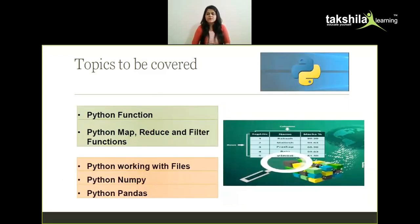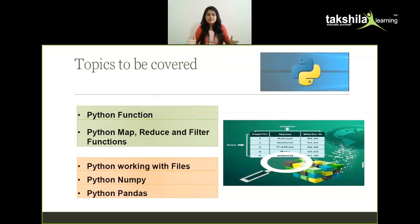Following the basic data types, we'll study Python functions, map, reduce, and filter functions, and then how to work with different kinds of files. When going for data analysis, the data may be available in various formats — structured, unstructured, or semi-structured. For example, data might be an Excel sheet, a comma-separated file, or a JSON file. We'll be teaching you how to work with all those file formats.